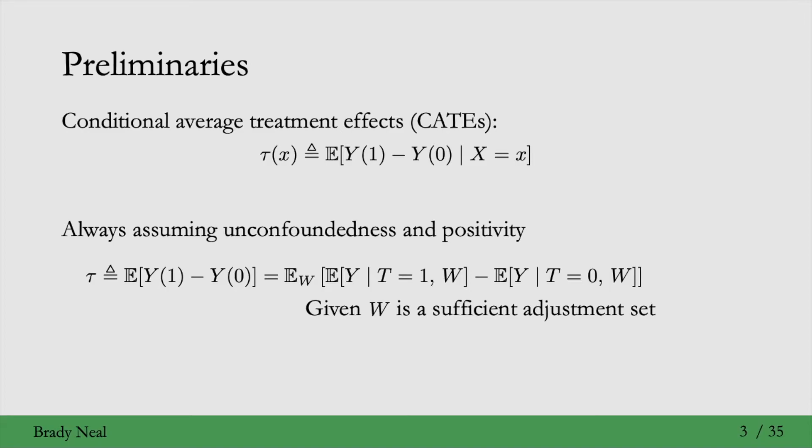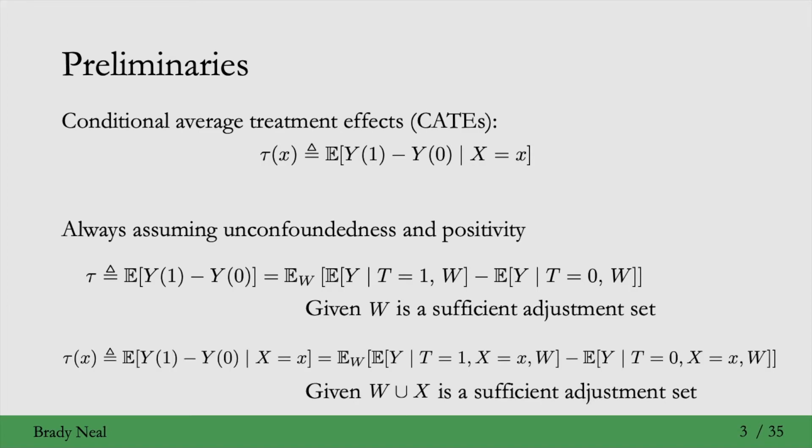More specifically, we have that the average treatment effect, which we'll denote with tau, is equal to this usual statistical estimand on the right here, where W is a sufficient adjustment set. And tau of x, the CATE, the conditional average treatment effect, is equal to the same thing, but where we're conditioning on x. So W is not the only thing in our adjustment set. We also have x in the adjustment set because we're conditioning on x here.